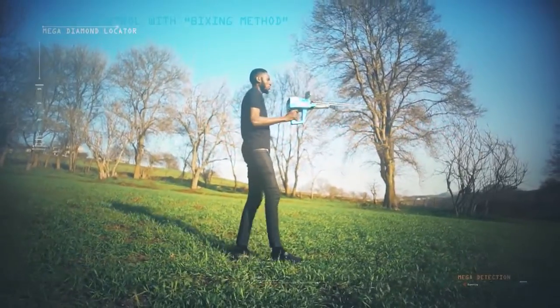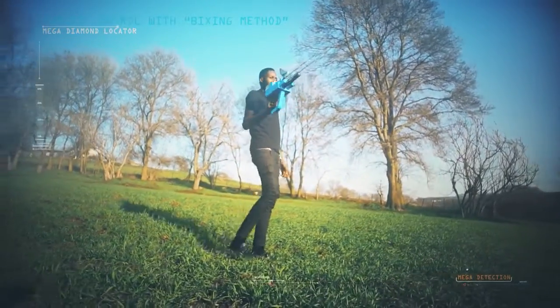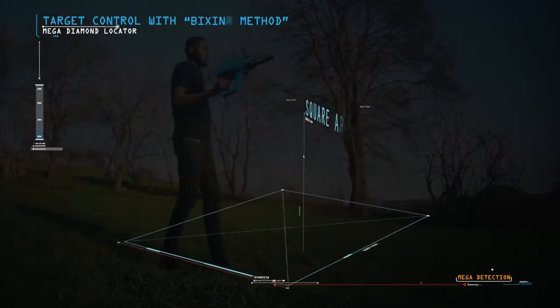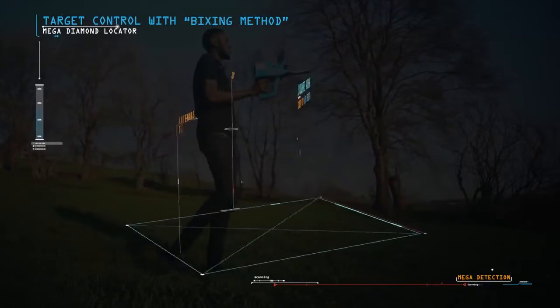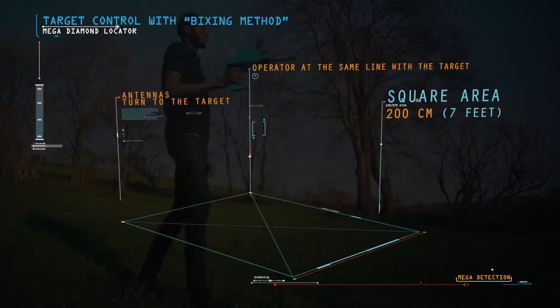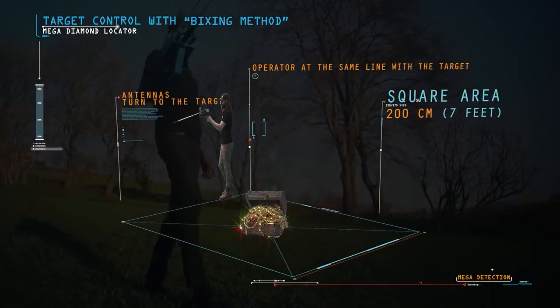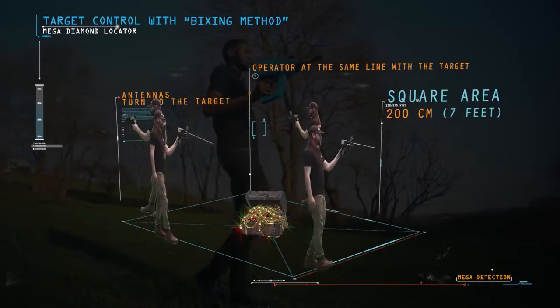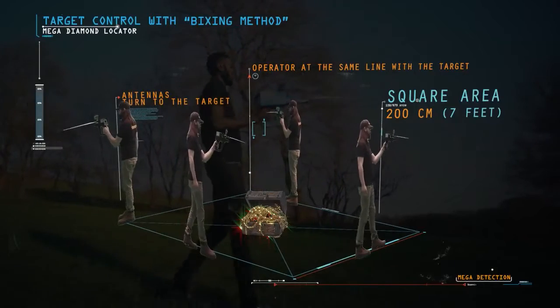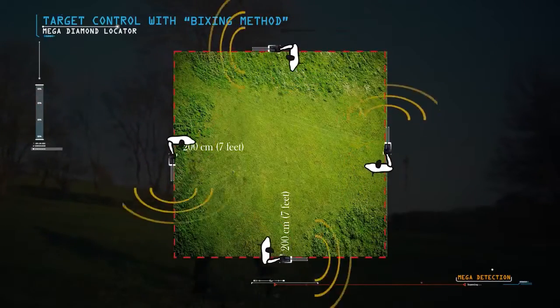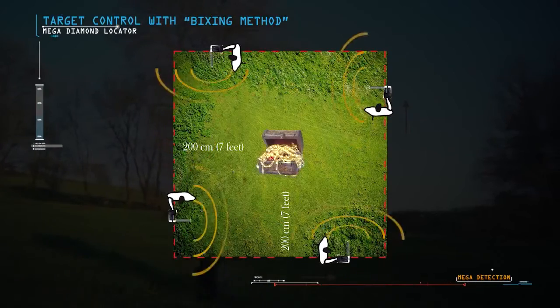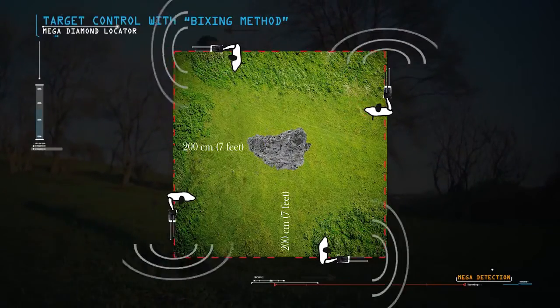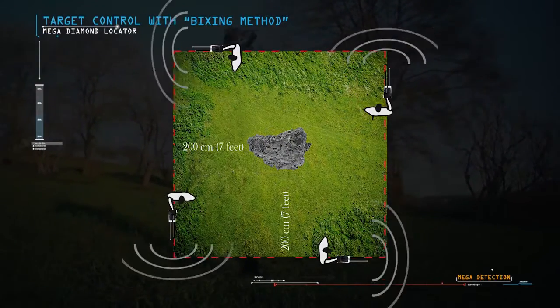Target control with boxing method: This method allows the operator to determine the target location and to clarify the trueness of the target. A square is completed around the target with a distance of about 200 cm from the target center. When the operator is at the same line with the target, the antennas turn to the target. If the target is real, the antennas should turn to the target from all four sides. Otherwise, there is a possibility that the target being not real.